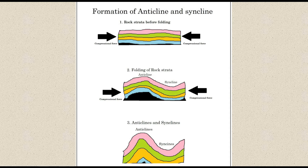We should learn to draw the diagram showing the formation of anticlines and synclines in three steps. First, draw horizontal layers of rock with two arrows from both sides to show compressional force. Second, show a gradual bending of the rock as anticlines and synclines begin to form. Third, show both anticlines and synclines using colors or shades — ensuring the same rock layer has the same design throughout. Label the diagram as: rock strata before folding, folding of rock strata, and anticline and syncline formation.